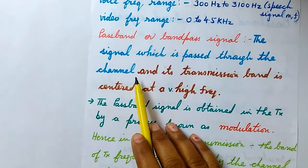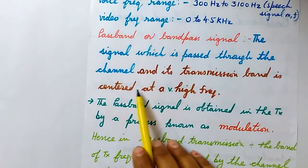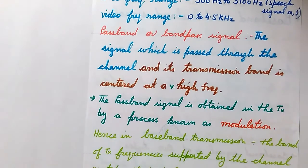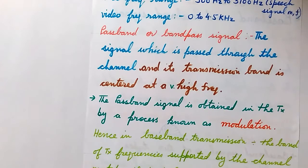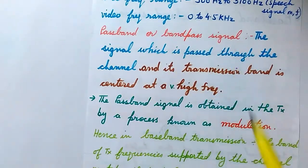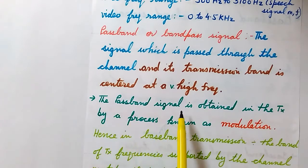Since the baseband signal has to travel larger distances, the original signal is sent with the carrier signal, and the carrier is a very high frequency signal. What actually happens is a frequency translation: the baseband signal is translated from a low frequency zone to a high frequency zone. Hence, the transmitted signal used for transmission over longer distances is called the passband signal or band pass signal, centered around a very high frequency. The passband signal is obtained in the transmitter by the process known as modulation.